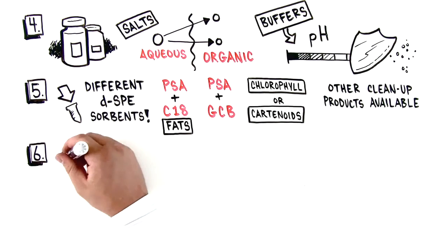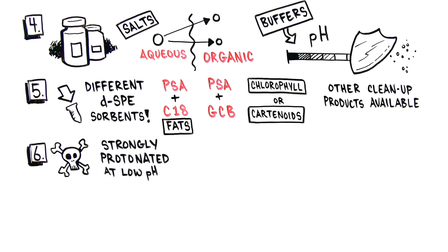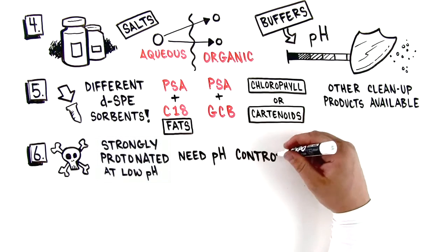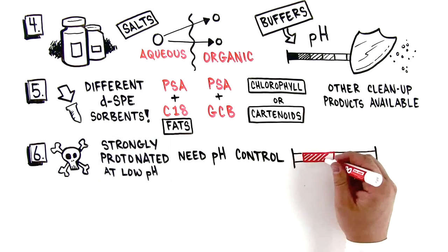Number six, some pesticides, like those strongly protonated at low pH, require pH control and need to be buffered to pH 2 through 7 prior to extraction.